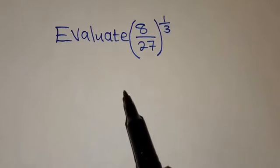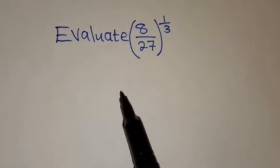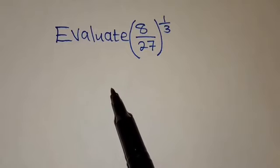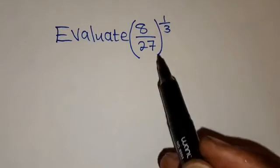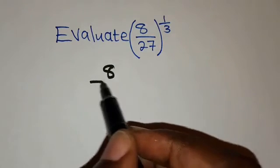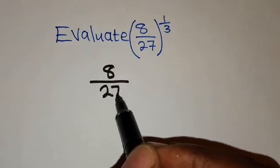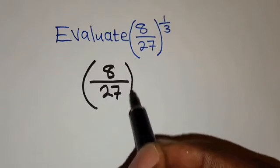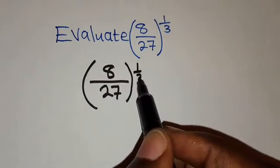The question says evaluate. To evaluate means you need to work out and find the actual value. So let's just rewrite this expression. We have 8 over 27 to the power 1 third.